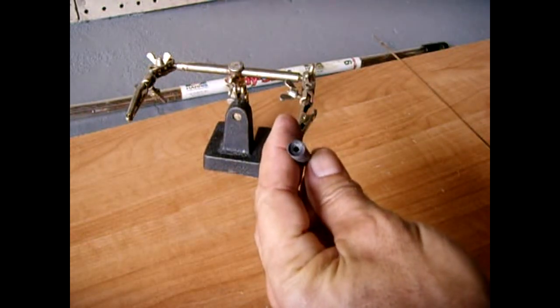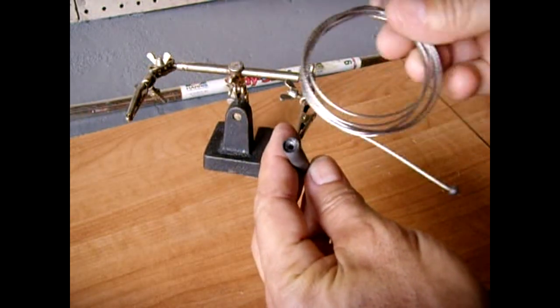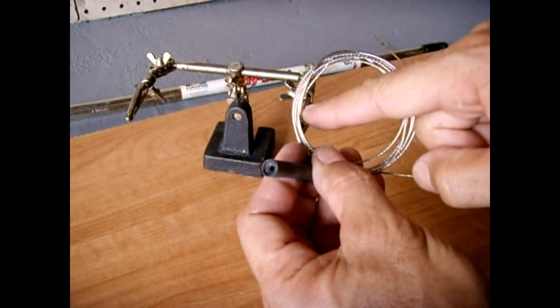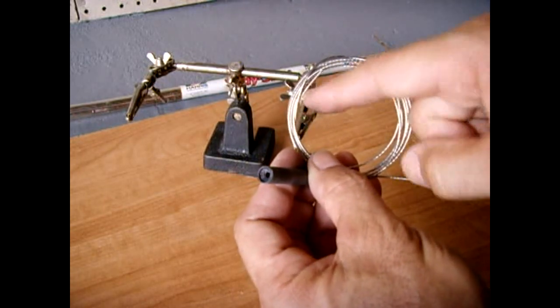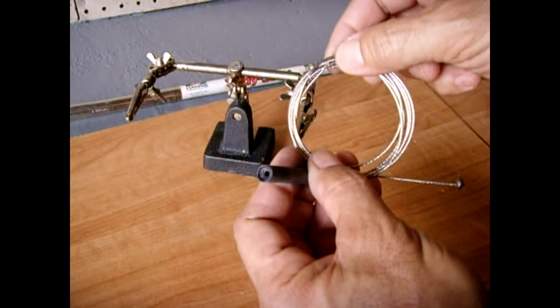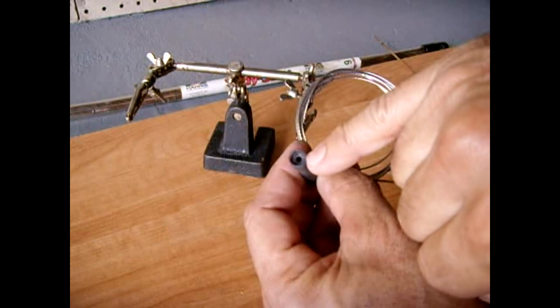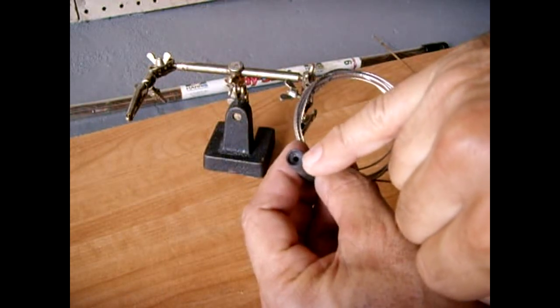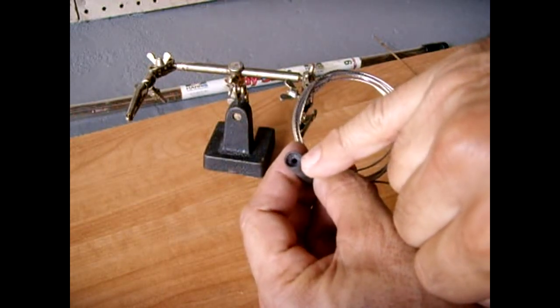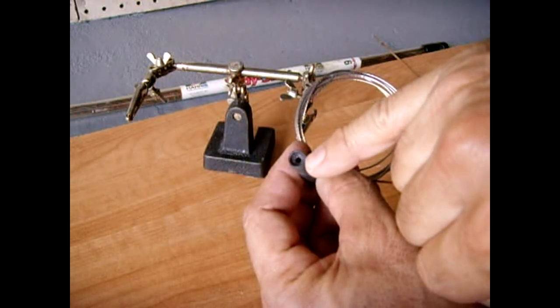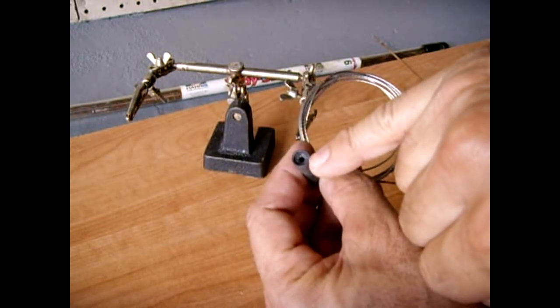Once this is all drilled out to the proper diameters, you'll take about an eighth to three-sixteenths of an inch of the end of the cable, fold it over nice and tight, and you're going to shove the loop that's folded over inside the hole. You don't want this hole drilled too deeply. You want the end of the loop where it's been cut and folded over to be embedded in the mass of molten brazing material.